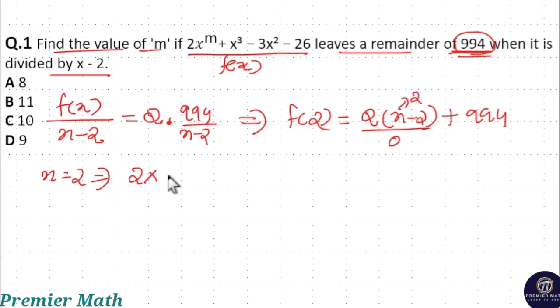That is 2 · 2^m + 2^3, which is 8, minus 3 · 2^2, which is 3 · 4 = 12, minus 26, equals 994.